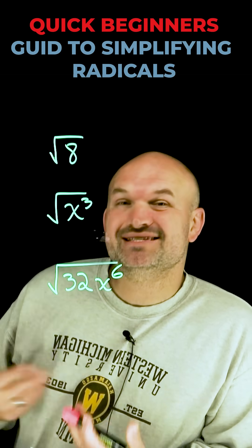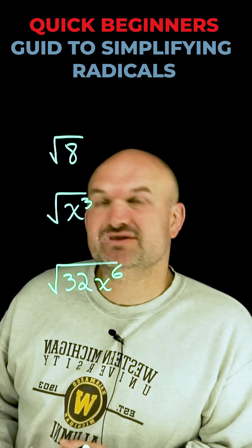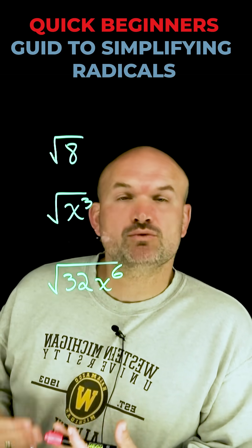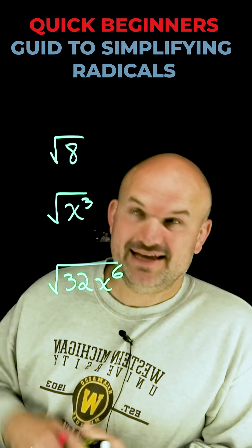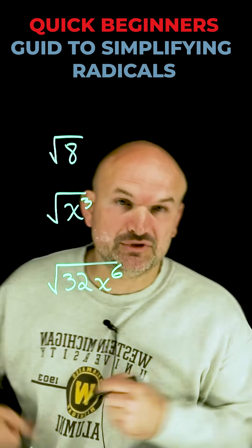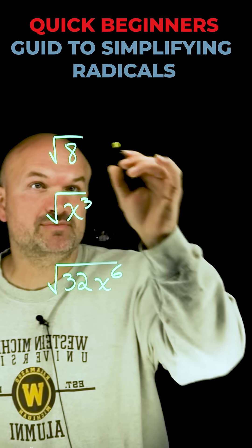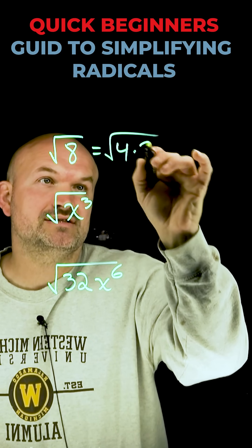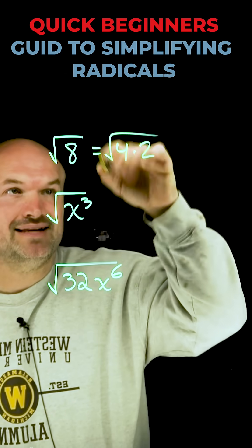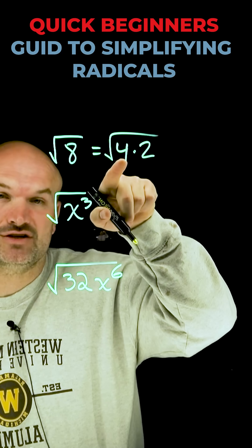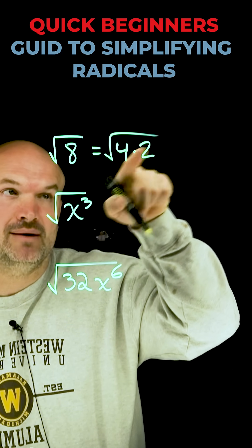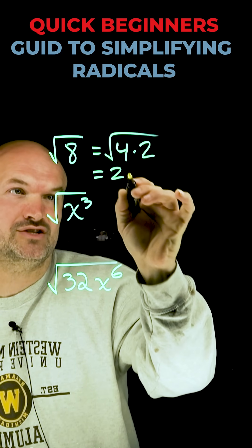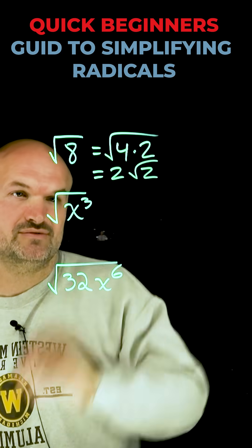When we want to simplify the square root of 8, what we want to do is find the largest square number that evenly divides into 8. In this example you can see that it's going to be 4. So I'm going to rewrite 8 as 4 times 2. Now I can take the square root of 4, but I cannot take the square root of 2. So I can rewrite this expression as 2 square root of 2.